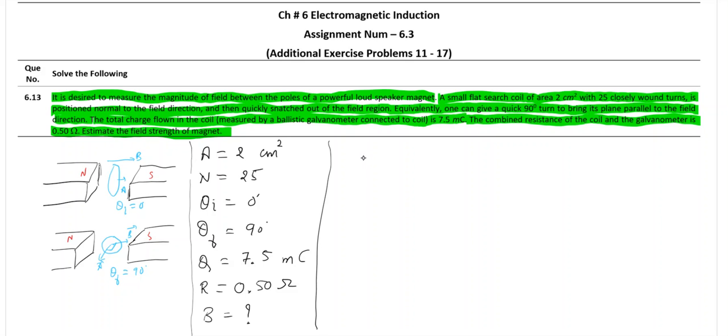So all what we know about the induction phenomena is that epsilon is d phi by dt. So I can write this as, sorry, let me consider average epsilon. So we will consider delta phi by delta t. You can take d phi by dt also.